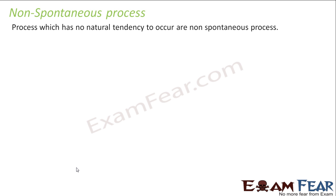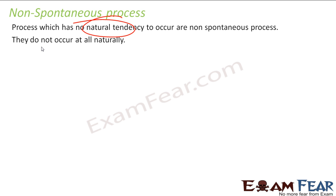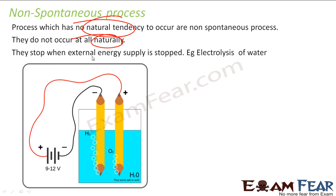A non-spontaneous process is one which is not spontaneous — it does not have a natural tendency to occur and does not occur naturally. An example is the electrolysis of water. If you stop giving electrical energy — the extra energy required — it will stop. The moment you plug in and start giving electrical energy again, electrolysis will start. The moment you stop, it will stop. This is an example of a non-spontaneous process where extra energy is continuously needed.